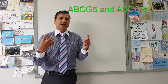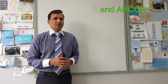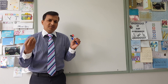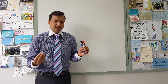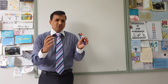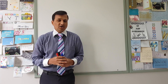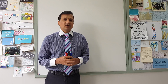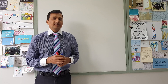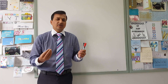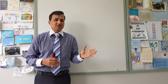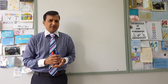Now where exactly are these transporters present? The ABCG5 and ABCG8 transporter — which together we refer to as the sterolin transporter — is located in the intestinal epithelial cells and also in the hepatocytes, that is in the intestine and in the liver.